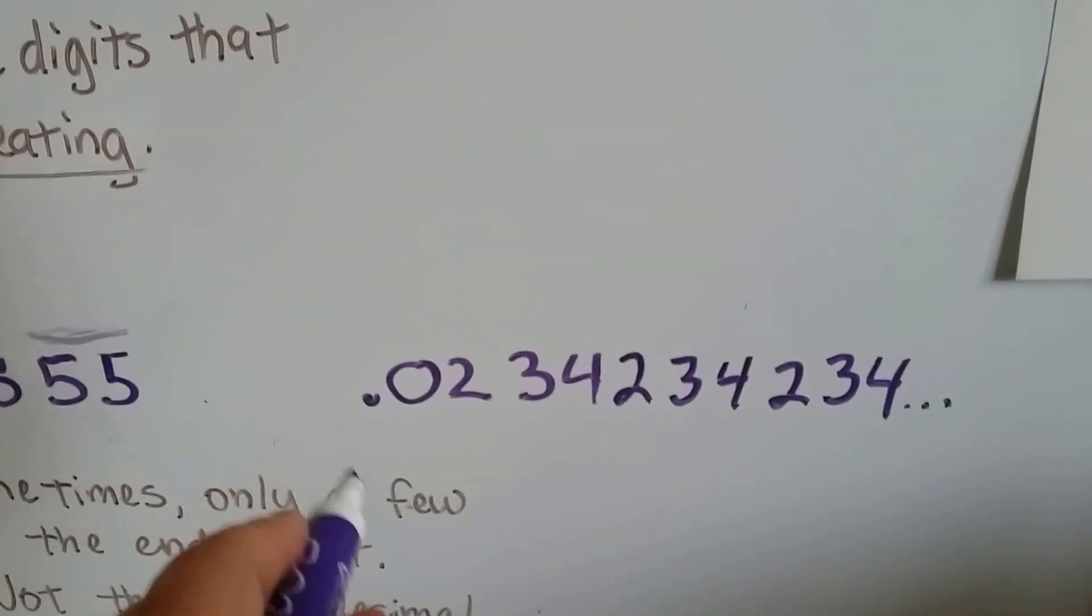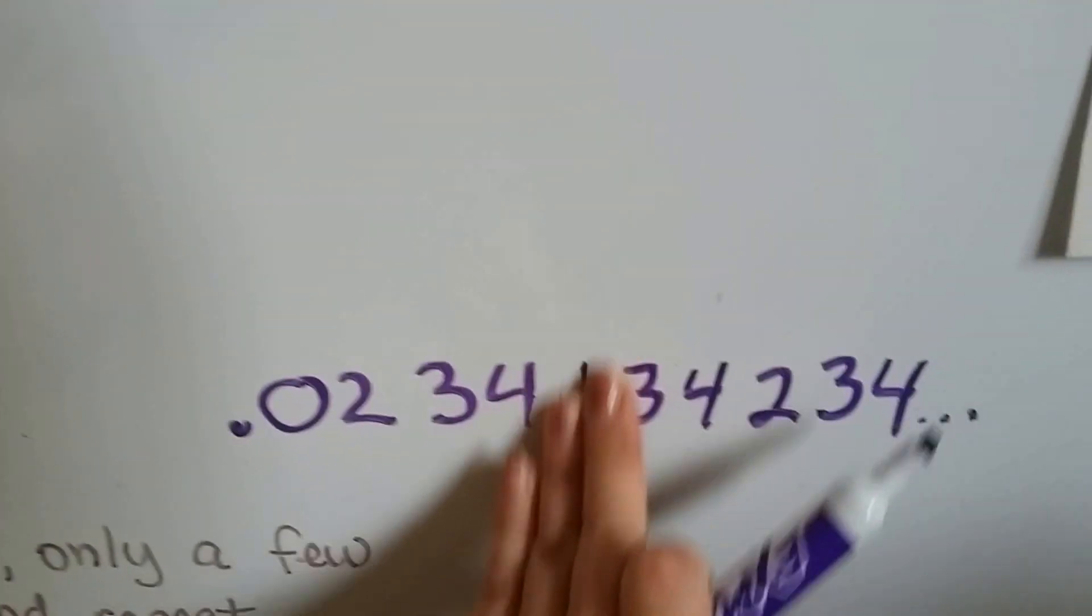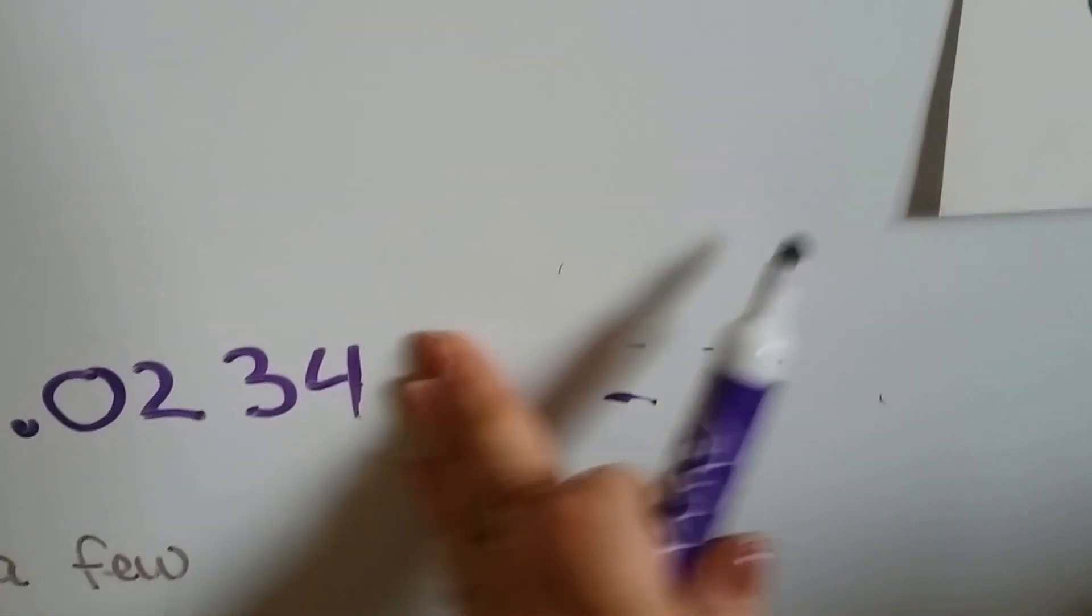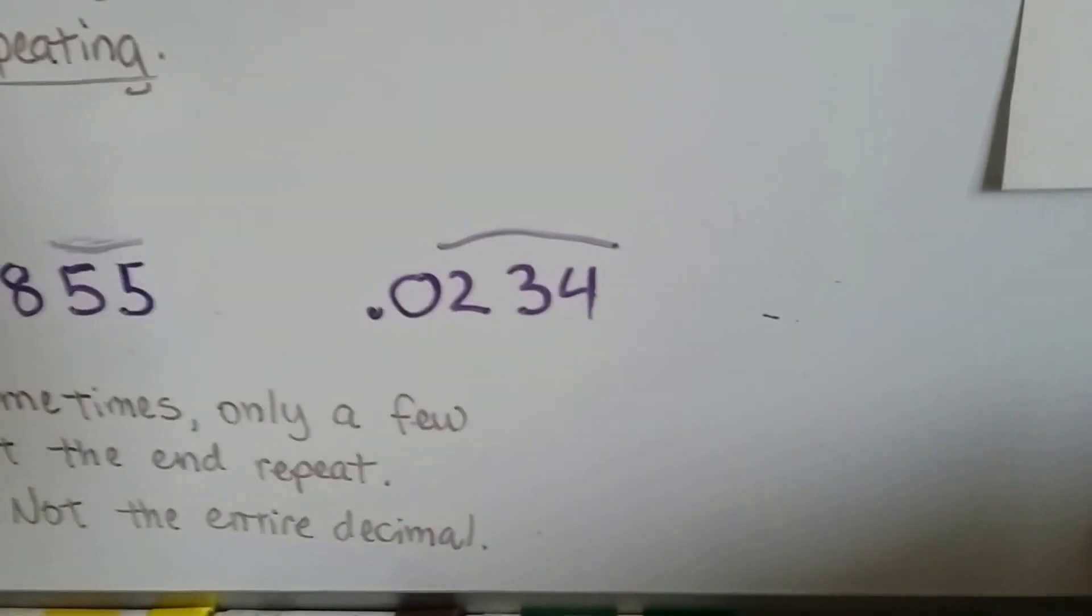Now for this one, 0.0234234..., we don't have to write all these. We can get rid of these and just put a bar over the top of the 234.